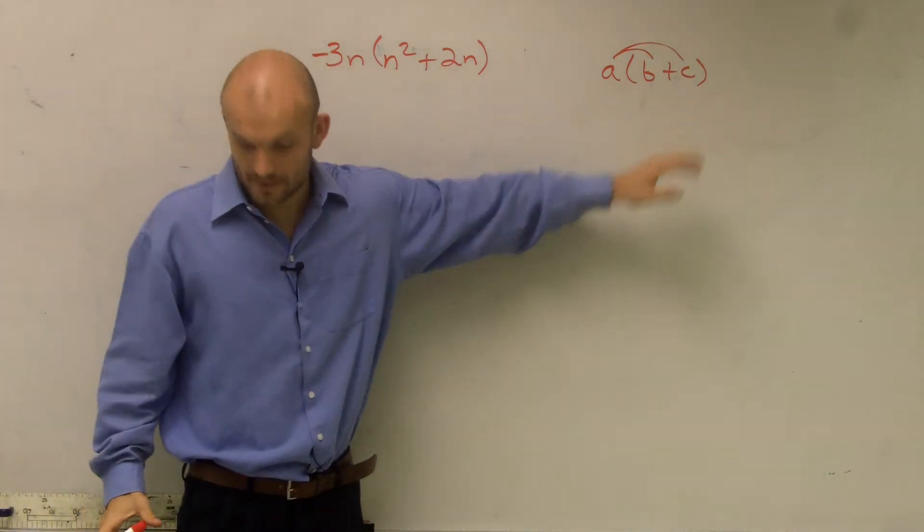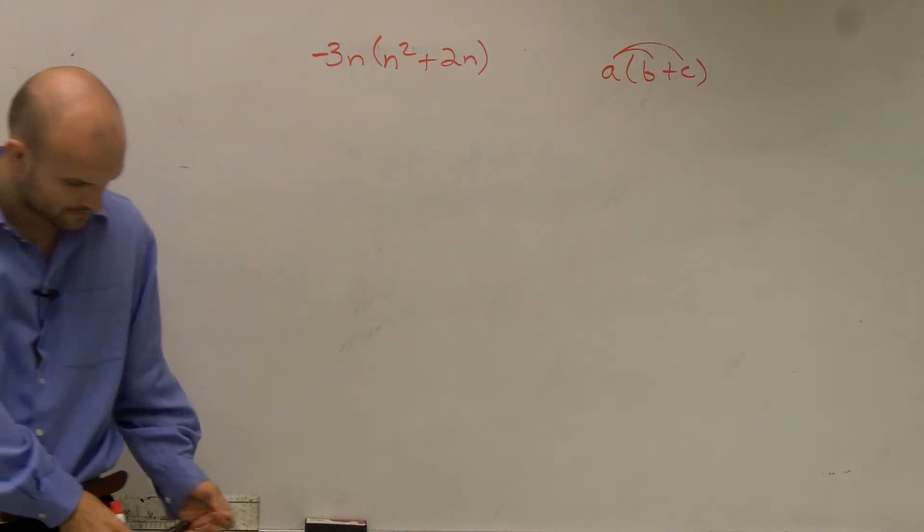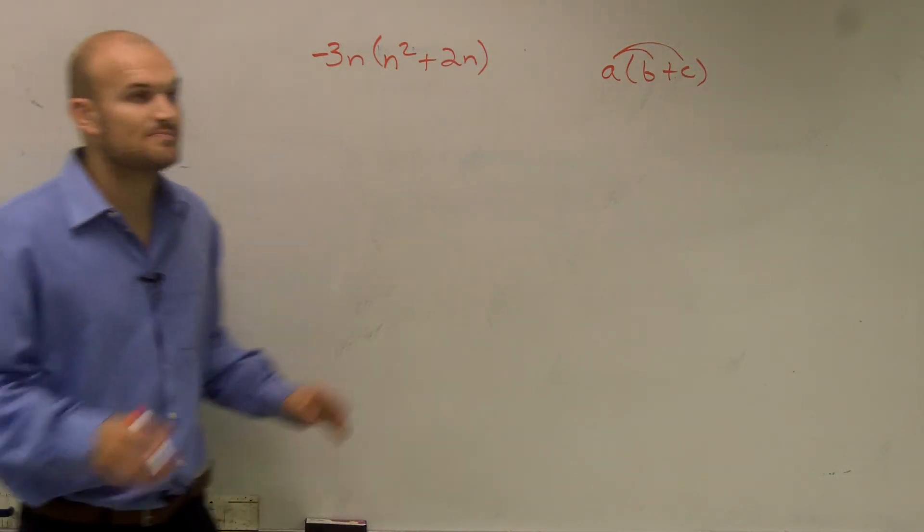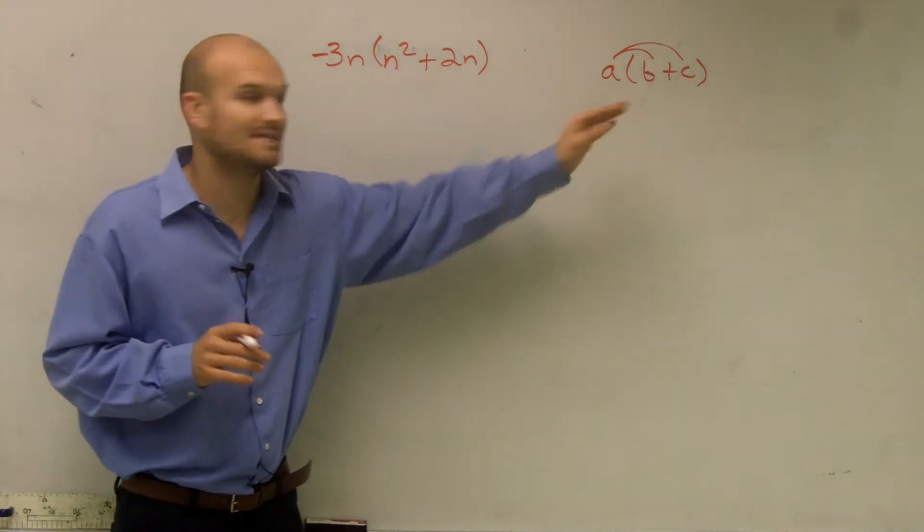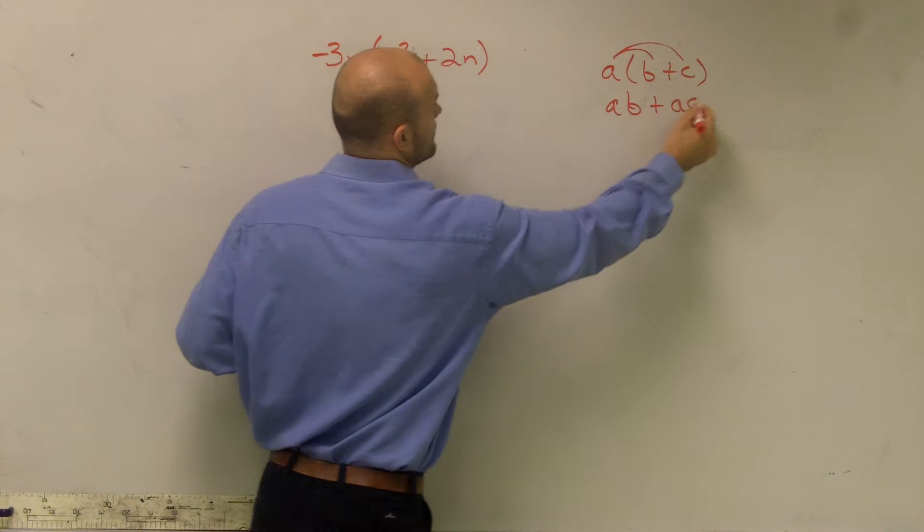So you have a times b. There we go. You have a times b and then times a times c.